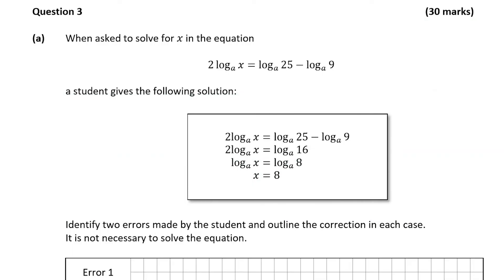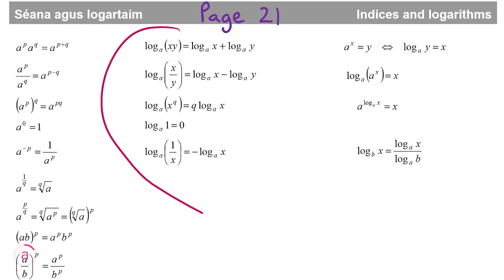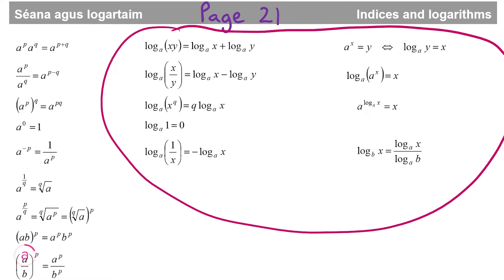We're going to look at question 3, which is a 30 mark question on logarithms. Part A of the question is worth 10 marks, and we're told that when a student was trying to solve for x in the following equation, they gave the following solution. We're asked to identify two errors the student made and then outline the correction in each case. We don't actually have to solve the equation. So let's have a look at the logarithm rules first of all — these are on page 21 of your formula and tables book. The logarithm rules are down the centre and on the right-hand side, and I recommend getting to know these rules as the logarithm questions often require us to implement them.